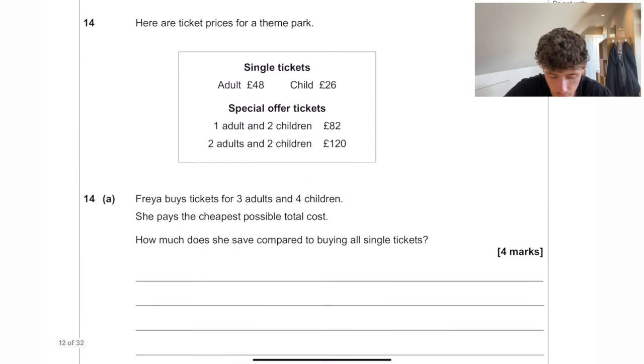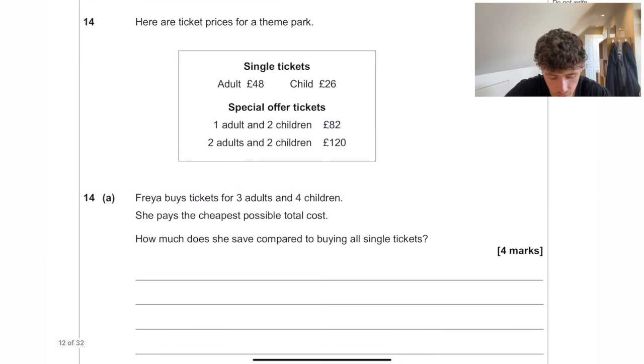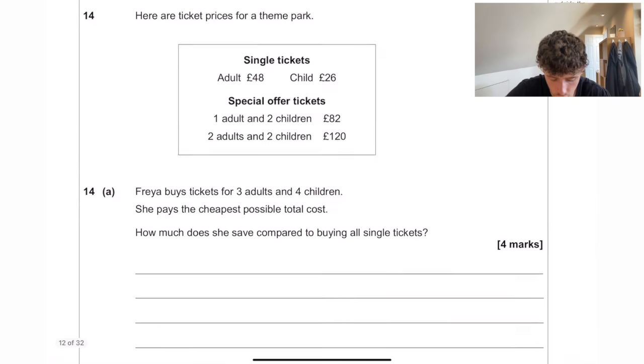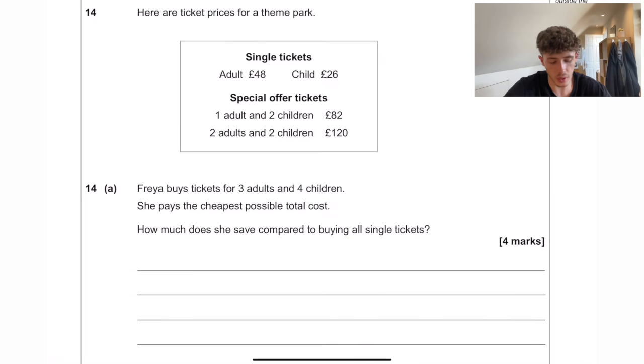Here are ticket prices for a theme park. Freya buys tickets for three adults and four children. She pays the cheapest possible total cost. How much does she save compared to buying all single tickets? So four marks, you'd have to show both, even if you can spot it straight away.